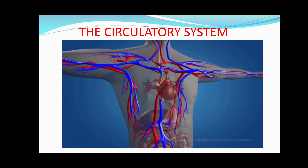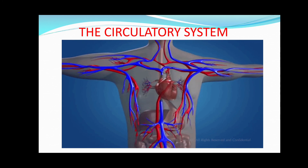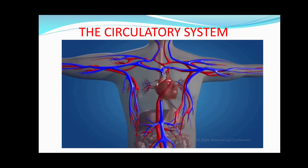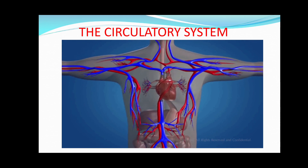Now we are going to discuss about the circulatory system. The nourishment we get from food and the oxygen we inhale from the lungs is carried to different body parts by blood. Blood circulating in the body keeps carrying fresh nourishment and bringing back waste products from different body parts. All this is done by a system of organs — the heart, blood vessels, and blood — which constitute the circulatory system.